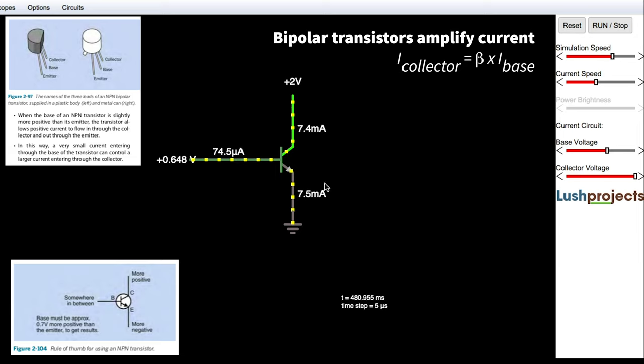So that small current gets magnified by approximately, in this case, 100-fold. And that's what the beta value means. It is the number by which you multiply the small base current by to get the total collector current.